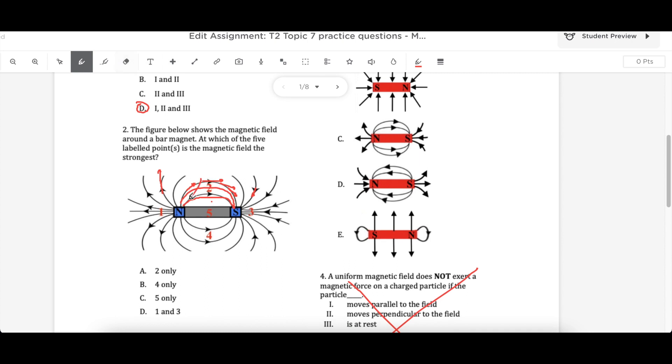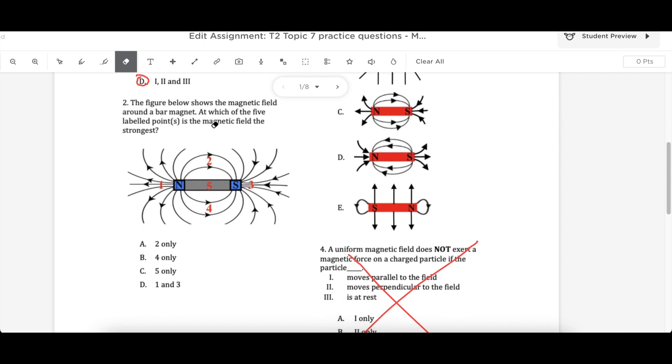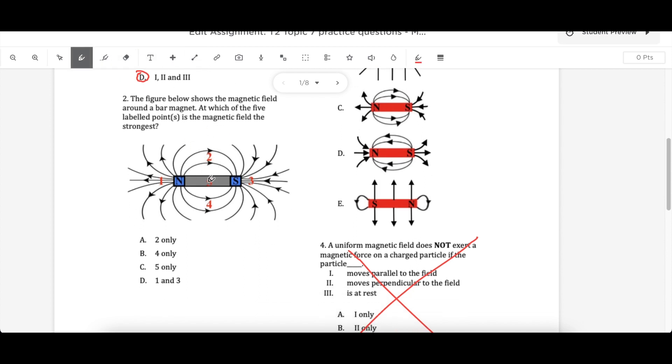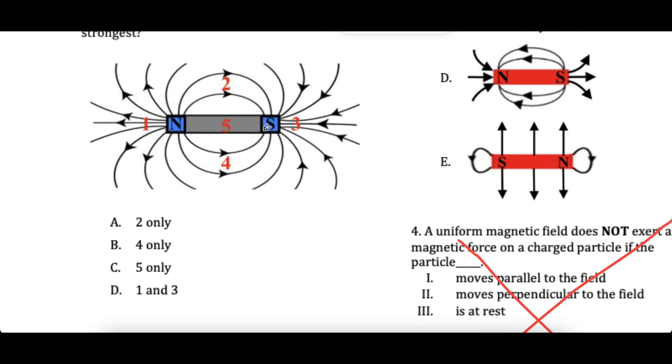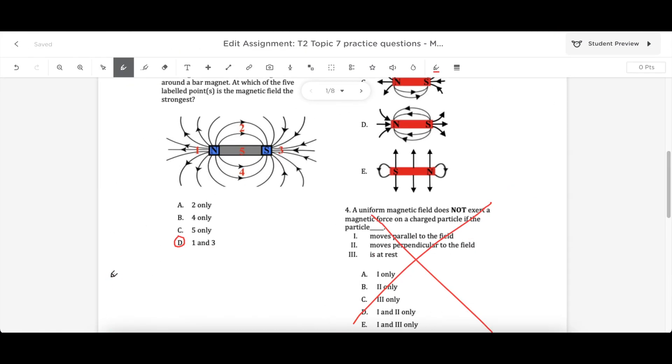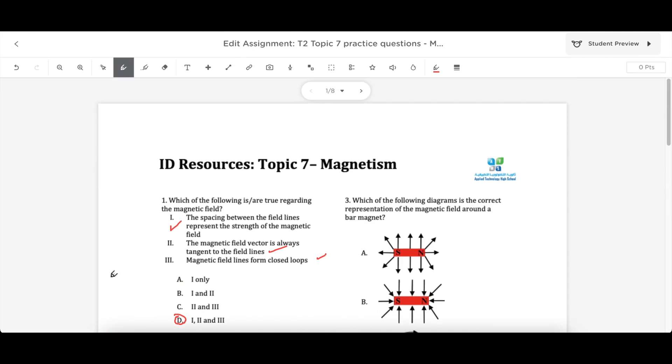So I've butchered question two. Let me just fix that up. Okay, so question two. The figure below shows this label. Which label is at the strongest? And I actually just gave it away, didn't I? One and three are the strongest. They're close to the poles. The strongest at the poles. Weakest would be two and four. So at the poles, the magnetic field and a magnet will be the strongest. Where are we? One and three. The answer would be D in this case.